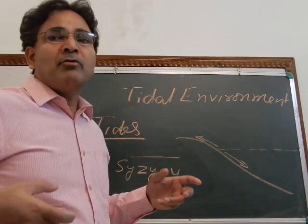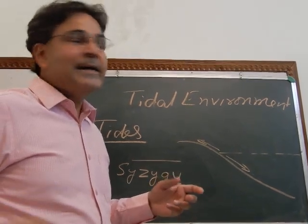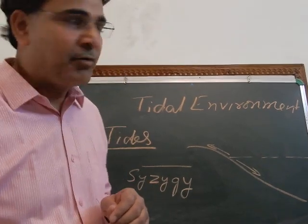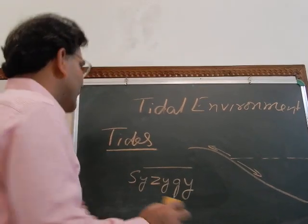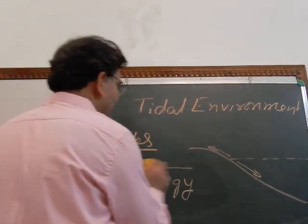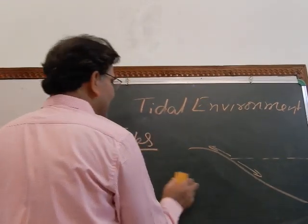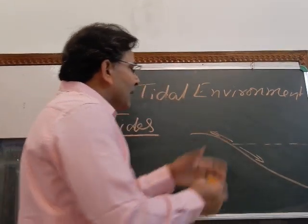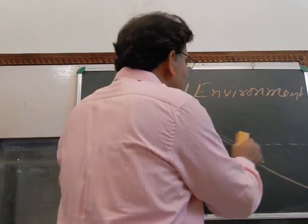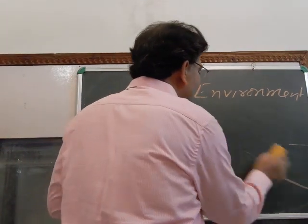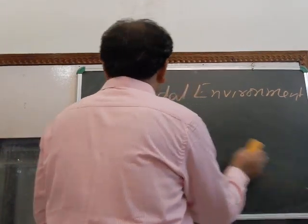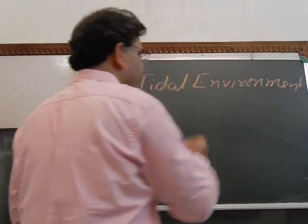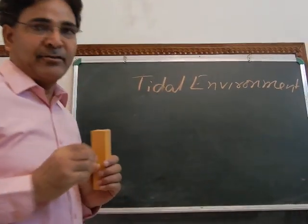Syzygy is responsible for the high tide, and when they are at right angles to each other, that is responsible for the low tide — the spring tide and the neap tide. The rise and fall of sea water from the main sea level is known as tides.